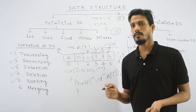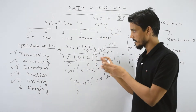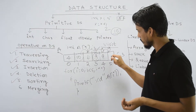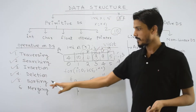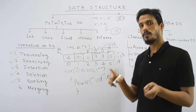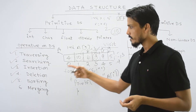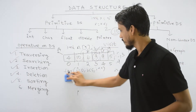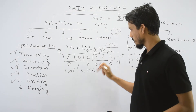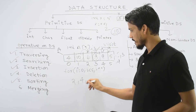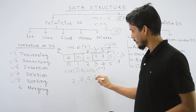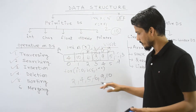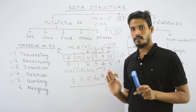Next is sorting. If you have an array, for example 4, 10, 6, 2, 9, and you apply sorting, the array will be arranged in either ascending or descending order. We will discuss different sorting algorithms. In ascending order, the result would be 2, 4, 6, 9, 10. In descending order it would be reversed. This is sorting.